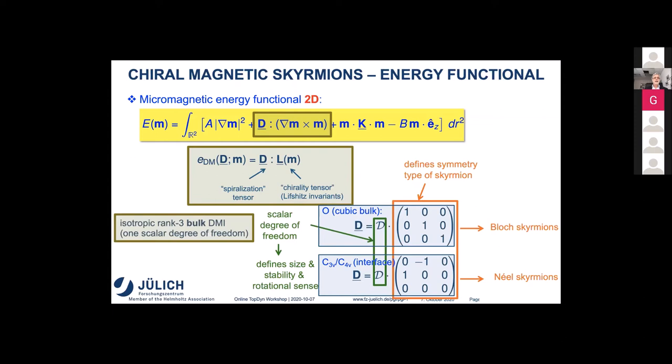The cubic system gives bulk DMI, which we call rank-3 DMI, and the interface system gives film DMI, which we call rank-2 DMI. I'm focusing in this talk on Néel-type skyrmions of interface-type systems.